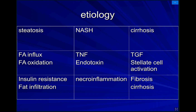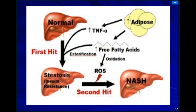This slide shows the pathology of liver steatosis. There is fatty acid influx and fatty acid oxidation, which leads to insulin resistance because of fat infiltration. This leads to an inflammatory process involving tumor necrosis factor and endotoxin, which leads to cirrhosis. Triglyceride-related cell activation is responsible for the fibrosis and cirrhosis. Most of NAFLD is driven by insulin resistance.